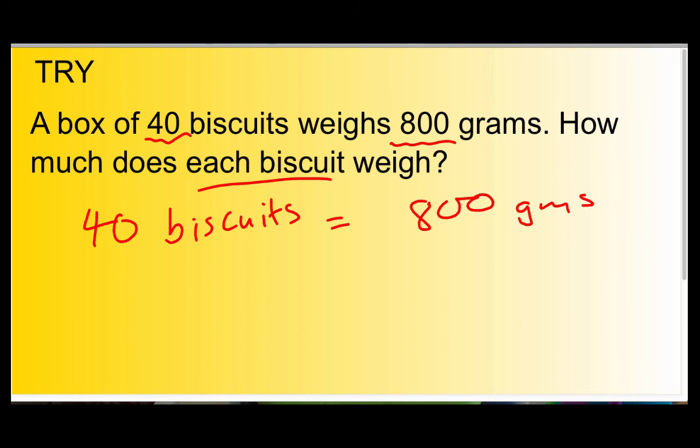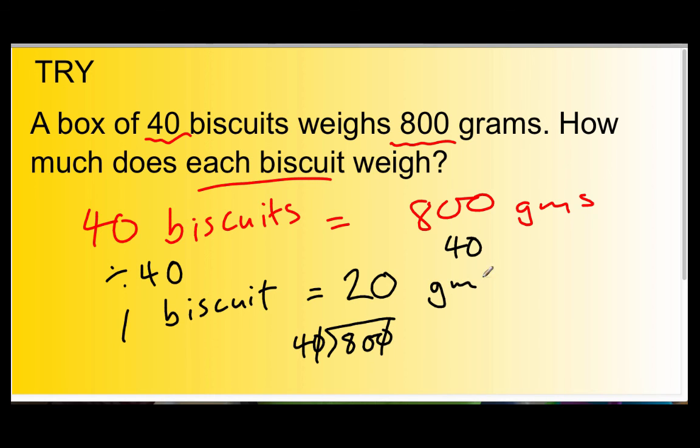And then, let's change pen colour for excitement purposes. 40 biscuits divided by 40, because we want to get it down to 1 biscuit, don't we? 40 divided by 40 equals 1 biscuit. 800 divided by 40 equals... Well, let's work it out. Sometimes I need to work it out as well. 800 divided by 40, cross off those zeros, 4 into 80 goes 20. 20 grams. So, 1 biscuit equals 20 grams.